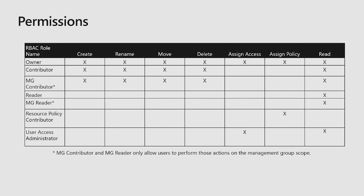A question we get a lot about is permissions. What permissions do I need to use management groups and how do I build them? We are RBAC related — role-based access control. You need to use the role-based roles that are built in right now to manage management groups. The Owner role is the top-level role. As an Owner, which is built in within role-based access control within ARM, this gives you the ability to create, rename, move, delete, assign access, assign policy, and read management groups.